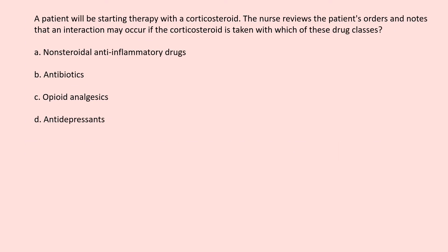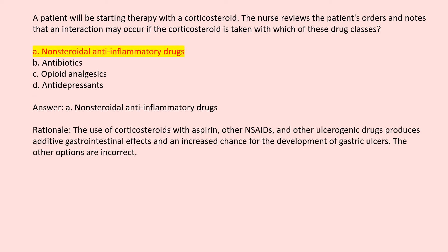A patient will be starting therapy with a corticosteroid. The nurse reviews the patient's orders and notes that an interaction may occur if the corticosteroid is taken with which drug class? A. Non-steroidal anti-inflammatory drugs. B. Antibiotics. C. Opioid analgesics. D. Antidepressants. Answer A. Non-steroidal anti-inflammatory drugs. Rationale: The use of corticosteroids with aspirin, other NSAIDs, and other ulcerogenic drugs produces additive gastrointestinal effects and an increased chance for development of gastric ulcers. The other options are incorrect.